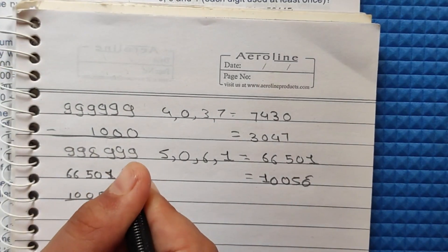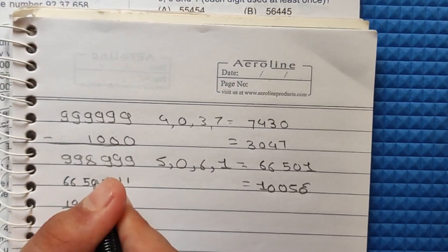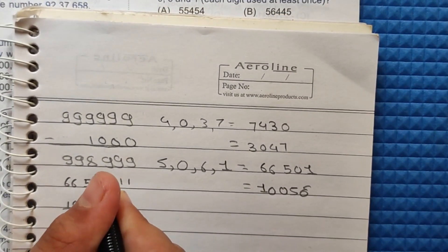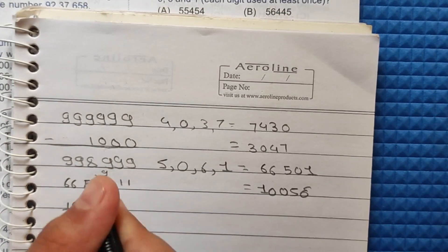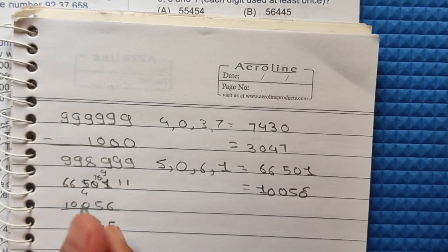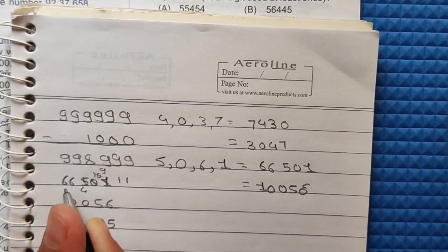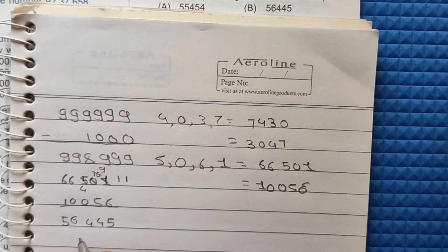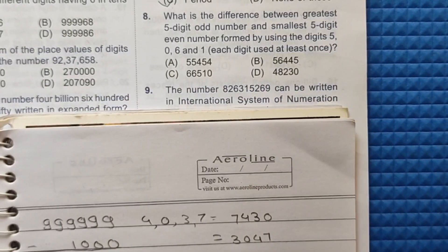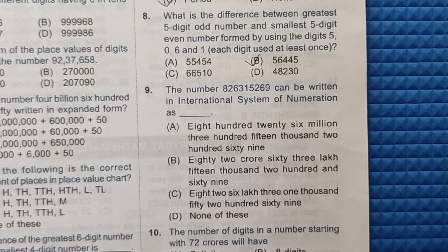Performing the subtraction of 66501 minus 10056: 11 minus 6 is 5; 10 minus 5 is 4 (after borrowing); 4 minus 0 is 4; 6 minus 0 is 6; 6 minus 1 is 5. So the correct answer is option number B: 56,445.